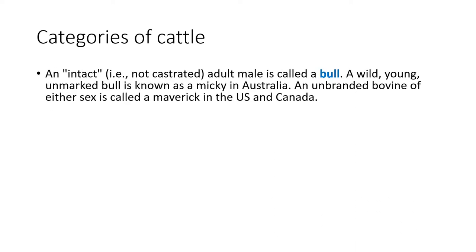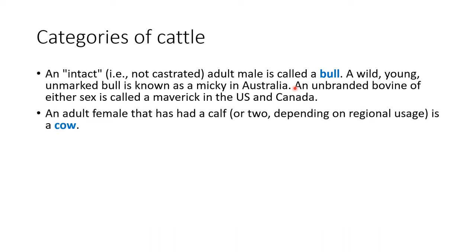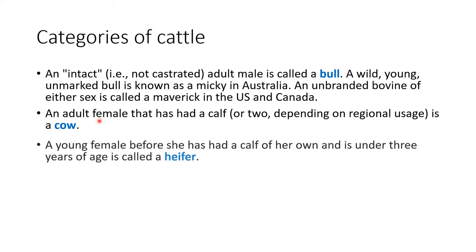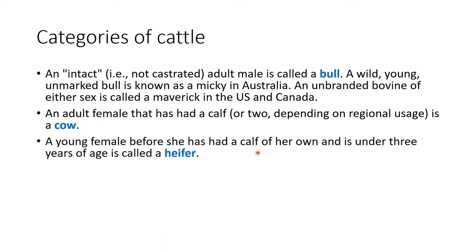Categories of cattle. First is intact — intact means it is not castrated. The intact non-castrated male is called a bull. An adult female cow that has had a calf or more than a single calf is called a cow. A young female before she has a calf and is under three years of age is called a heifer.